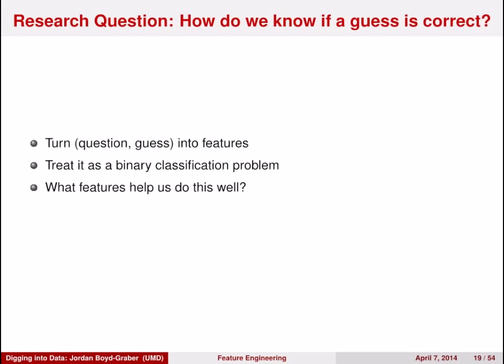And so the question is, how do you know if a guess is correct? We're going to turn a combination of a question that's interrupted at some point during the stream of clues into a set of features. And then we're going to treat that as a binary classification problem. Can you decide whether that guess was correct or not? And we'll investigate some of the features that help us do this well. This will also be the subject of homework number three. You'll be doing a Kaggle competition to try to determine whether guesses are correct or not.